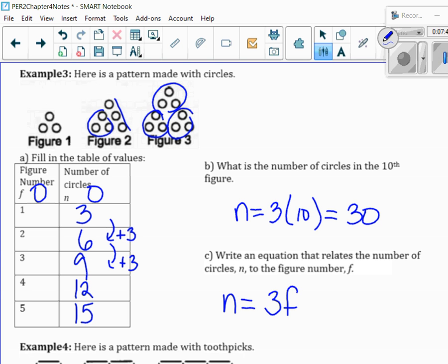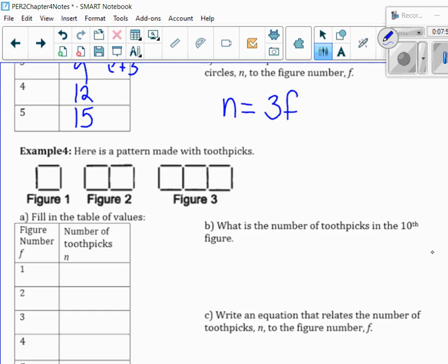So, making sure when we do the equation, equation means it has an equal sign and a left side and a right side. So, you can't just write it as 3F. That would not give you full marks. You have to write it as N equals 3F.